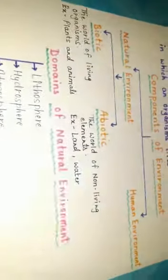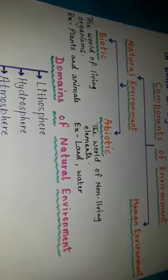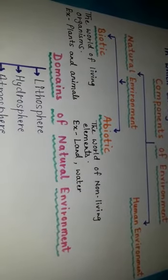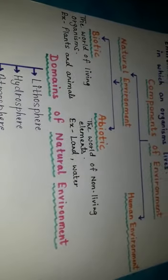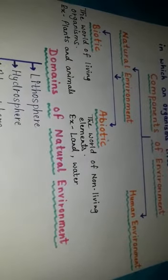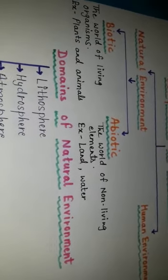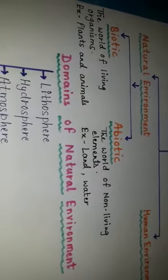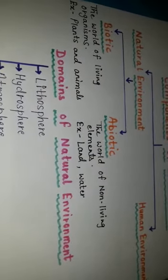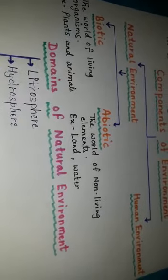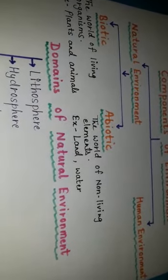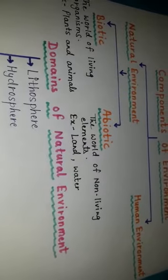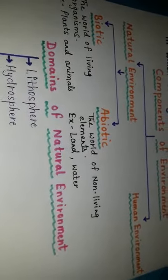The natural environment includes a large number of living things which are known as biotic, and non-living things as abiotic. Biotic means the world of living organisms, for example plants and animals. Abiotic means the world of non-living elements, for example land and water.